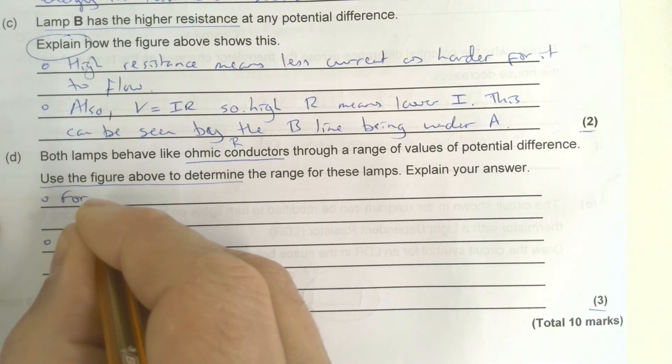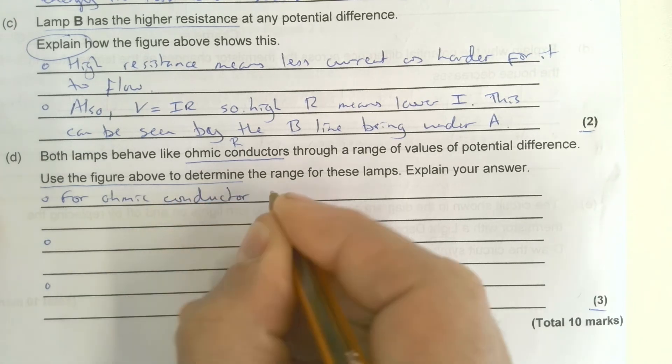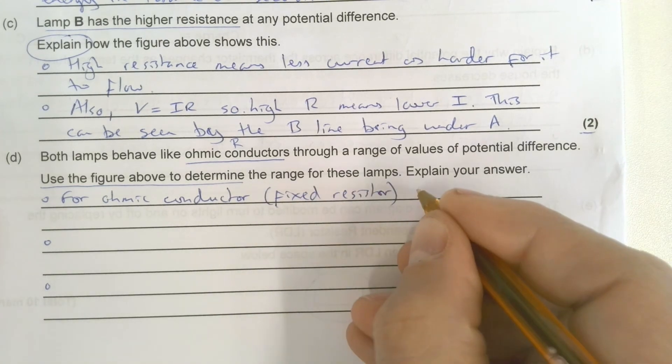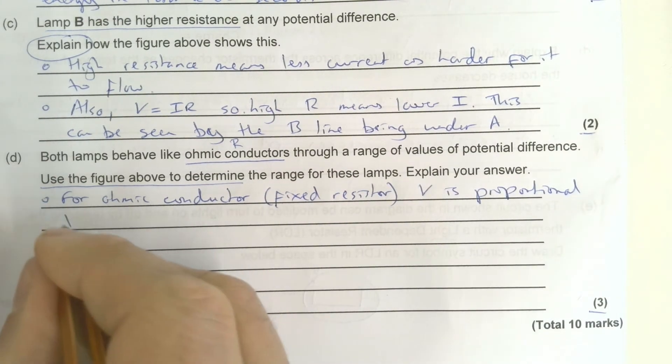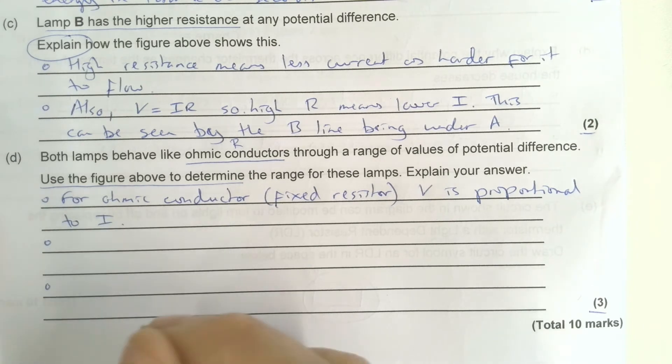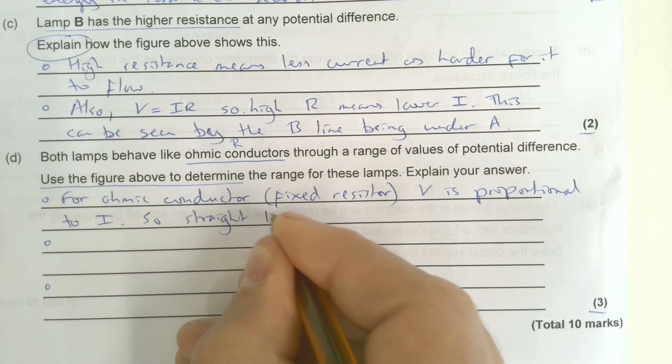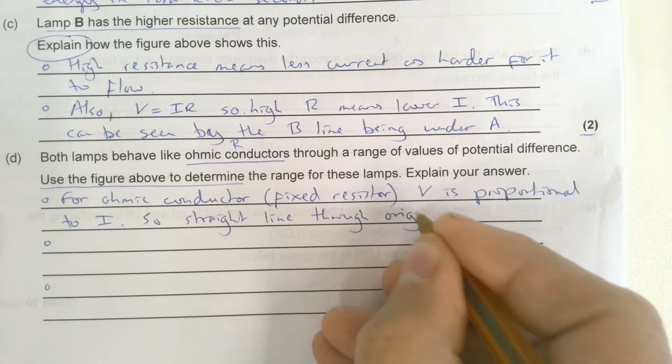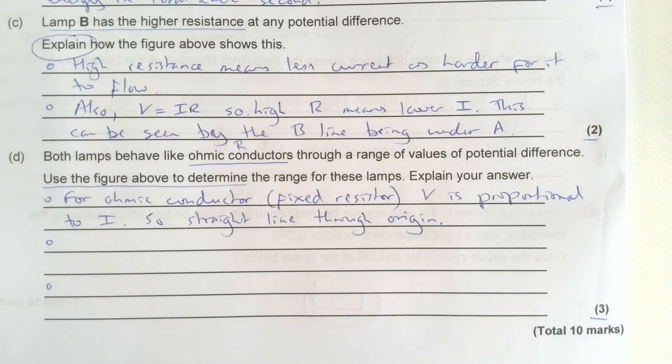For ohmic, I'll use their word conductor. Let's just say fixed resistor. V is proportional to I. So what that means is a straight line through the origin. Proportional graphs are always a straight line through the origin. So first of all I've laid that out. I've said that I know what the graph should look like for the bit where it looks like a fixed resistor.